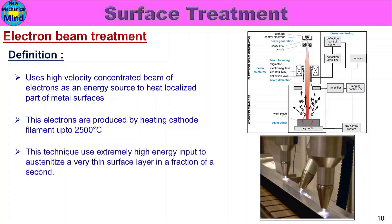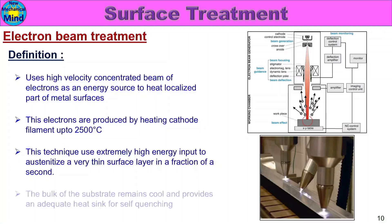This technique uses an extremely high energy input to austenitize a very thin surface layer in a fraction of a second. The bulk of the substrate remains cool and provides an adequate heat sink for self-quenching. If you are using the electron beam treatment on the surface, the remaining area of metal remains cool. This is the definition of electron beam treatment.